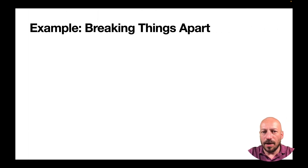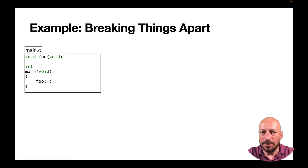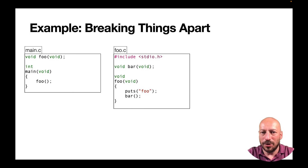With this simple rule — you can only call a function if it was previously declared — we can now break this program into parts: three parts, one translation unit per function definition. The translation unit with main needs a declaration for foo. The compiler generates object code that is not executable because it's missing the implementation of foo, so the object code contains a placeholder for the address of function foo, and later the linker patches this placeholder with the right address.